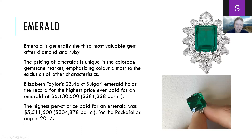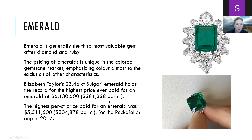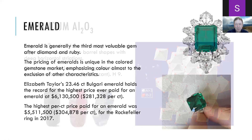The most important gem beryl is emerald, generally considered the third most valuable gem after diamond and ruby. The pricing of emeralds is unique in the color gem market because it emphasizes color almost to the exclusion of other characteristics such as inclusions and fractures. The Bulgari emerald holds the record for the highest price ever paid at just over six million dollars, and the Rockefeller ring set the record for the highest per-carat price at a little over five and a half million dollars.